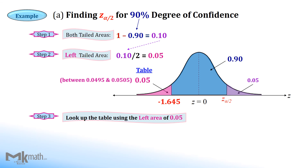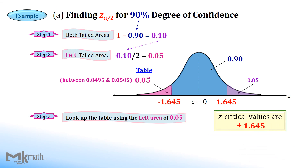Since we found the left critical value, we just change the sign to get the positive critical value. Therefore, the z-critical values for the 90% confidence level are ±1.645.